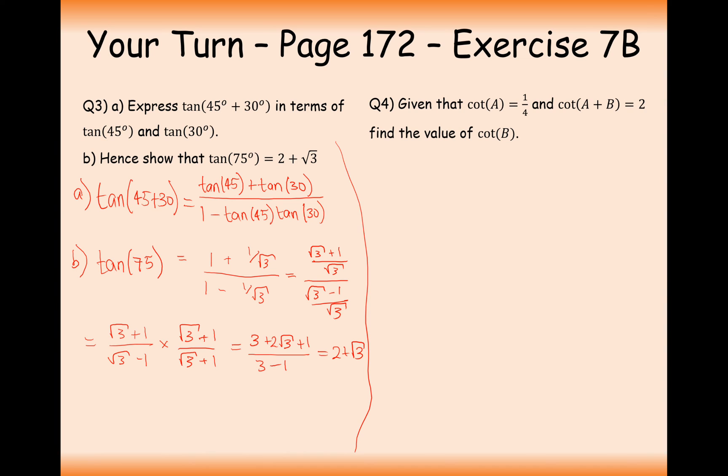Good stuff. There we are. So that's how we work out tan 75. Given that cot A is equal to a quarter and cot A plus B is equal to 2, find the value of cot B. So a bit of a difficult one here. What I'm thinking is that if we have cot A plus B then this is going to be the same as 1 over tan A plus B.